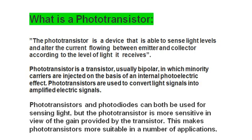Phototransistors and photodiodes can both be used for sensing light, but the phototransistor is more sensitive in view of the gain provided by the transistor. This is the main advantage of the phototransistor — it has more gain compared to the photodiode. This makes the phototransistor more suitable in a number of applications.